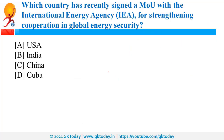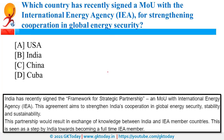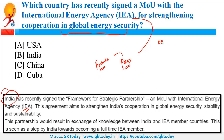India has signed a Memorandum of Understanding with the International Energy Agency for strengthening cooperation in global energy security. IEA is a Paris-based intergovernmental organization established under the framework of OECD — the Organisation for Economic Co-operation and Development. India is an associate member of the International Energy Agency.